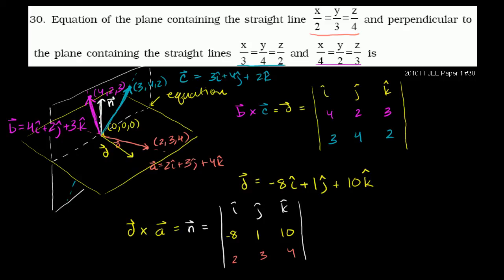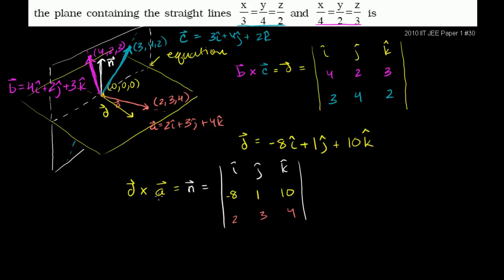So we can take the cross product of d and a to find a normal vector to the yellow plane. Then using that normal vector, and thinking about what an arbitrary vector on this plane might look like, we can figure out the equation for this yellow plane. Just a reminder: the cross product of two vectors in 3D space gives a third vector perpendicular to both. So let's take the cross product of d and a.